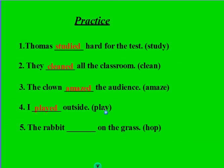I played outside. The base verb is play and it ends with a vowel plus the letter y, so we only added -ed. The rabbit hopped on the grass. The base verb is hop — one syllable, one vowel followed by one consonant — so we doubled the consonant and added -ed to show that the action happened in the past. Thank you for listening, Grade 3.